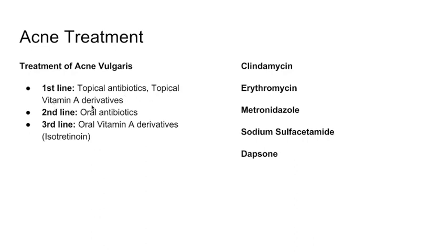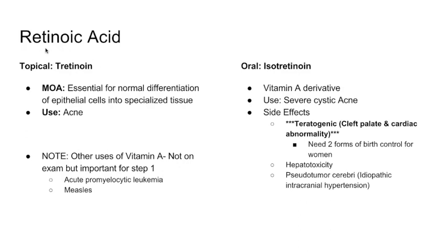The second line of acne treatment uses topical vitamin A derivatives. Vitamin A is called retinoic acid, and its topical form is called tretinoin. It's essential for normal differentiation of epithelial cells into specialized tissue. In acne, keratinocytes don't differentiate properly and close the skin pores, which then get infected. Vitamin A helps the differentiation of epithelial cells and keeps pores open, which is why topical tretinoin is used in acne.